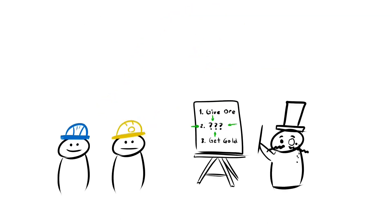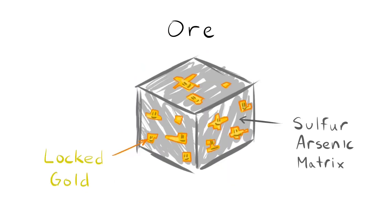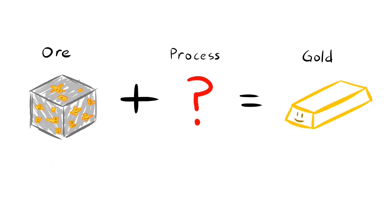So we have our ore. How do we get the gold out? Refractory ore like pyrite has gold particles locked in a sulfur or arsenic matrix. Extracting gold from this matrix is quite difficult.